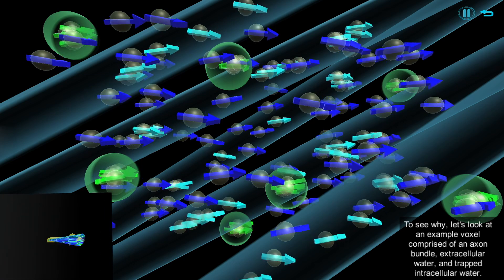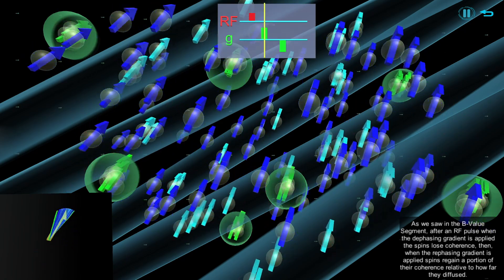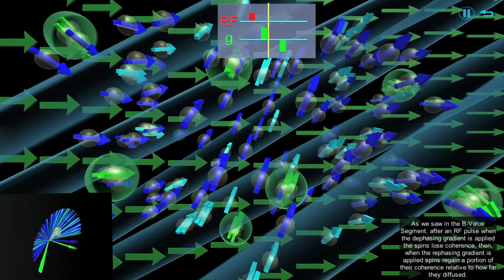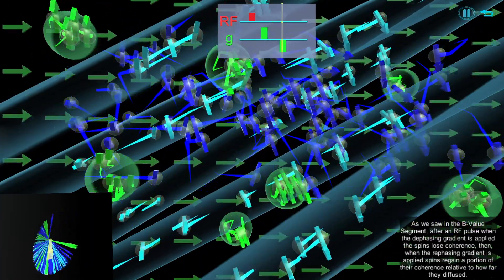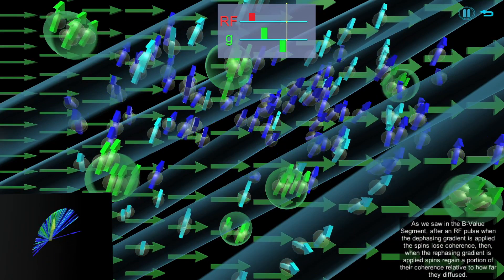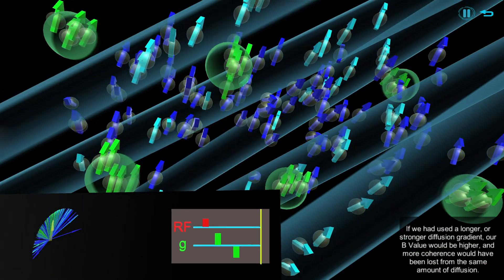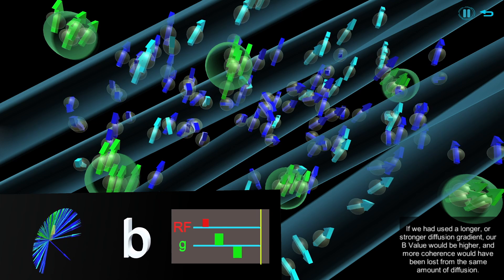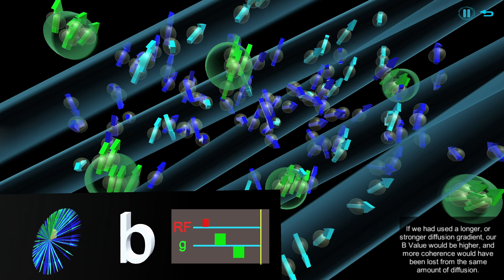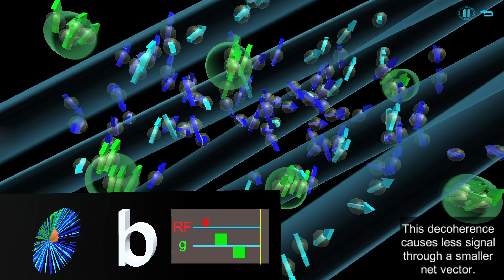As we saw in the b-value segment, after an RF pulse when the de-phasing gradient is applied the spins lose coherence, then when the re-phasing gradient is applied spins regain a portion of their coherence relative to how far they diffused. If we had used a longer or stronger diffusion gradient, our b-value would be higher, and more coherence would have been lost from the same amount of diffusion. This decoherence causes less signal through a smaller net vector.